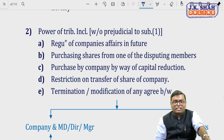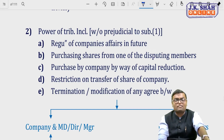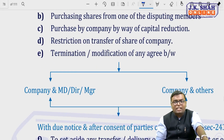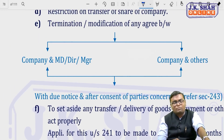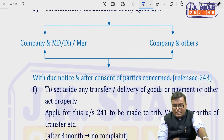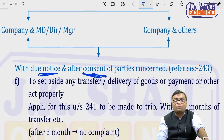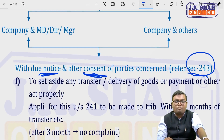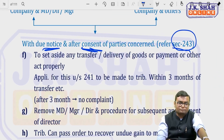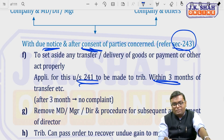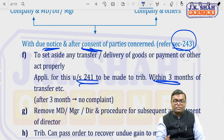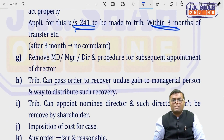Further tribunal powers under section 242: restriction on transfer of shares — putting shares on standby, preventing individual transfers; termination and modification of any agreement between the company and its MD, director, manager, or others — after due notice and consent, such agreements can be cancelled without compensation (section 243 deals with this); setting aside any transfer of goods, property, or payment that was made before the application — if the application under section 241 was made within 3 months of that transfer, the tribunal can set it aside. If applied after 3 months, nothing can be done.